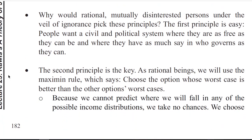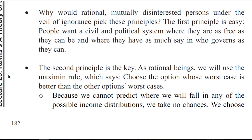Why wouldn't rational, mutually disinterested persons under the veil of ignorance pick these principles? The first principle is easy: people want a civil and political system where they are as free as they can be and have as much say in who governs as they can. The second principle is the key: as rational beings, we will use the maximin rule, which says choose the option whose worst case is better than the other options' worst cases.